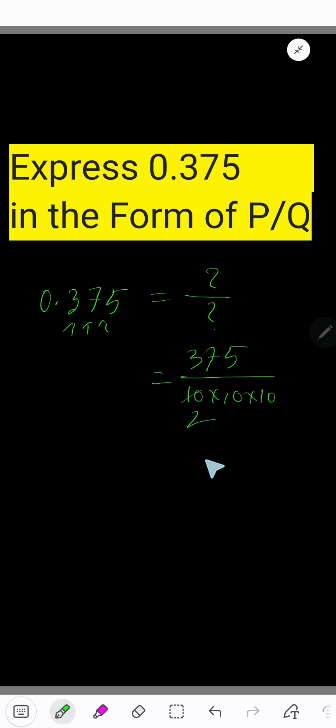And if you divide this 375 by 5, what you will get: 5 goes into 37, 7 times. 7 times 5 is 35. Subtract 2, bring down the next digit. 5 goes into 25, 5 times. 5 times 5 is 25. Subtract 0.